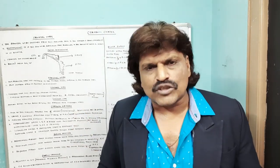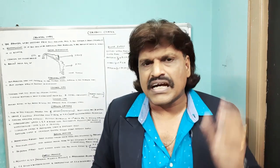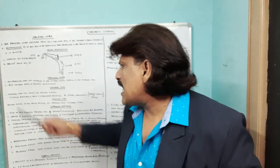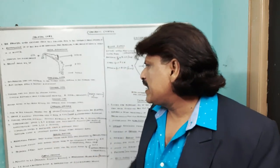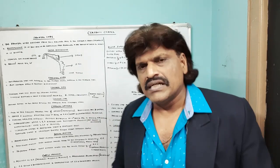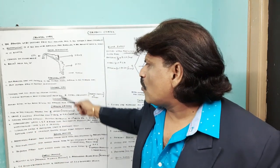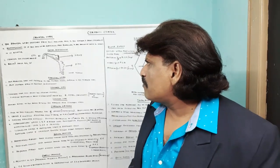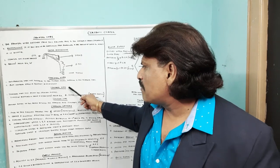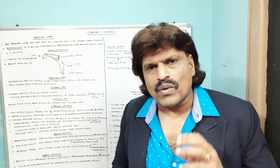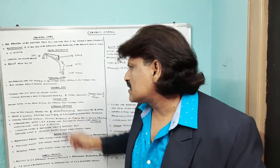Next is the occipital lobe, which is primarily concerned with vision. It is in the medial aspect of the brain between the parietal and temporal lobes. So we have now had an overview of all the lobes: frontal, parietal, temporal, and occipital lobe.